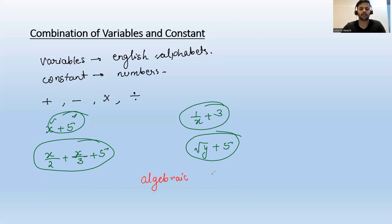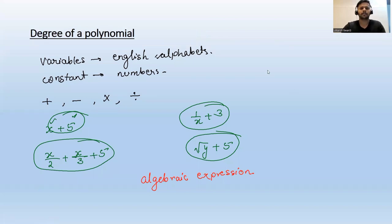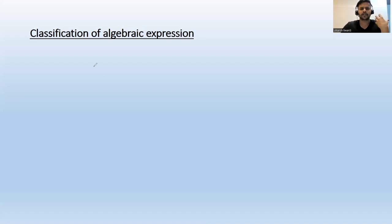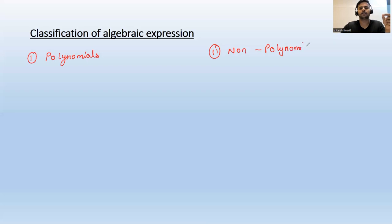So the first idea we have is the algebraic expression — it is a combination of variable and constant. Next is the classification of algebraic expression. An algebraic expression can be further classified into polynomials and non-polynomials.